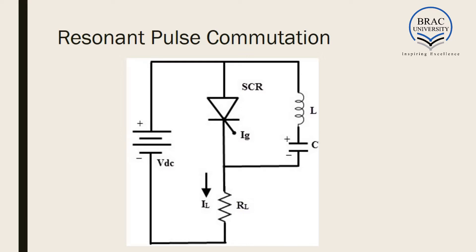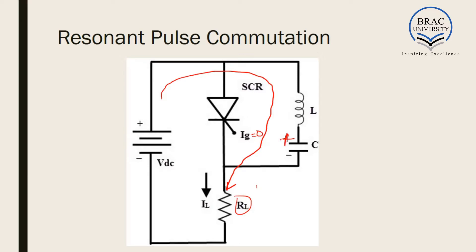The first circuit has an SCR with an inductive and capacitive circuit connected in parallel to the SCR, and a resistive load. This load is not necessarily resistive; it can be a combination of inductor, resistor, or anything else. When this SCR is off and IG is equal to zero, current flows in this direction, charging the capacitor positive on the top side and negative on the bottom side. When the capacitor is fully charged, it becomes open circuited and no current flows any longer through the load.